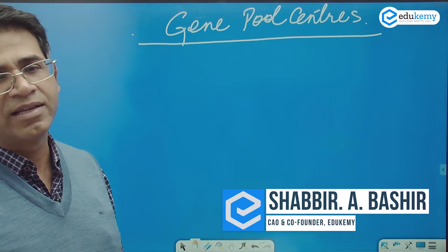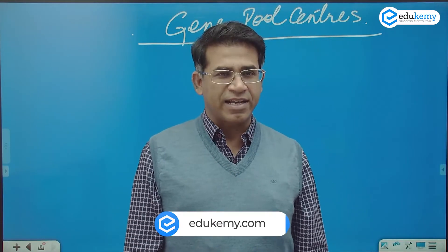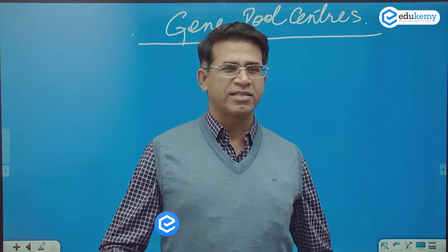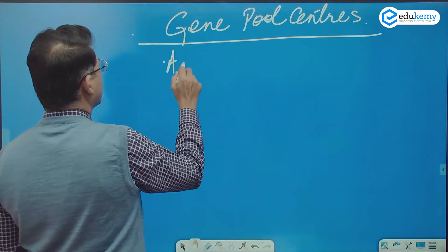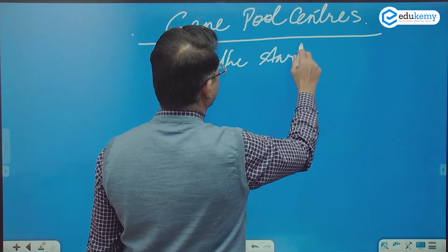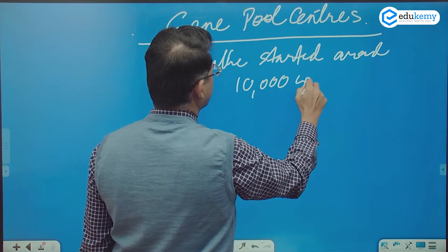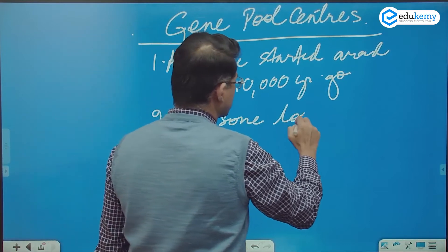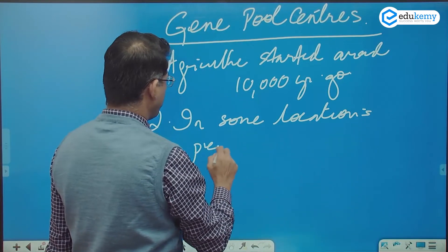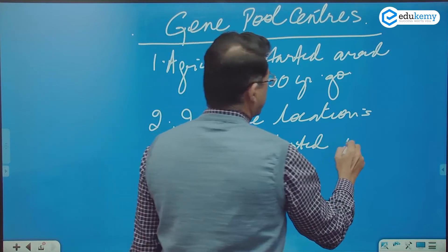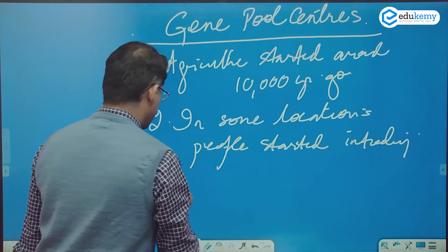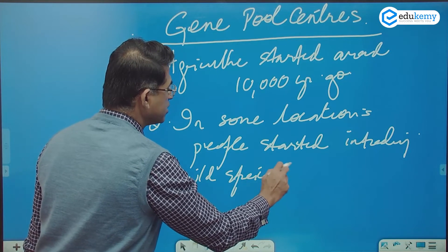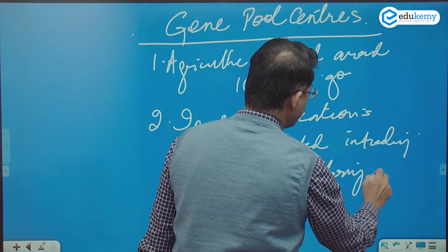What are gene pool centers? First, it is important to understand when agriculture started for the human race. Agriculture started around 10,000 years ago. That is the Neolithic Revolution. In some locations, people started introducing wild species into farming activities.